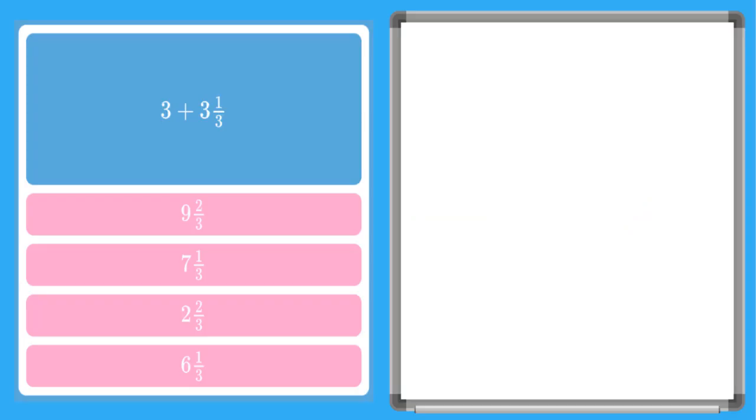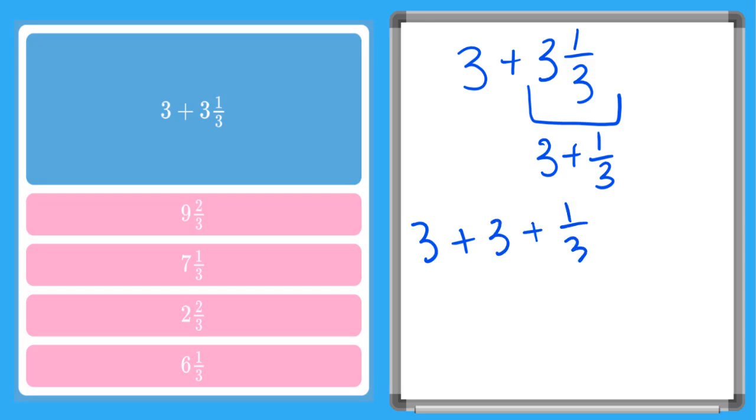So here we see whole number 3 plus 3 and 1/3. So before we go ahead and add these, let's remember that a mixed number here is the same as saying 3 plus 1/3. So we can rewrite this whole expression out as 3 plus 3 plus 1/3.